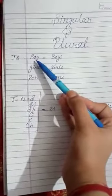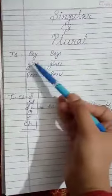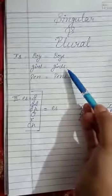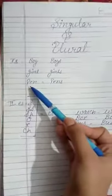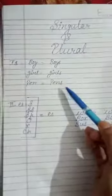Boy here refers to one single boy, boys means many boys. Girl is a single girl, girls means many girls. Pen is a single pen, pens means many pens.